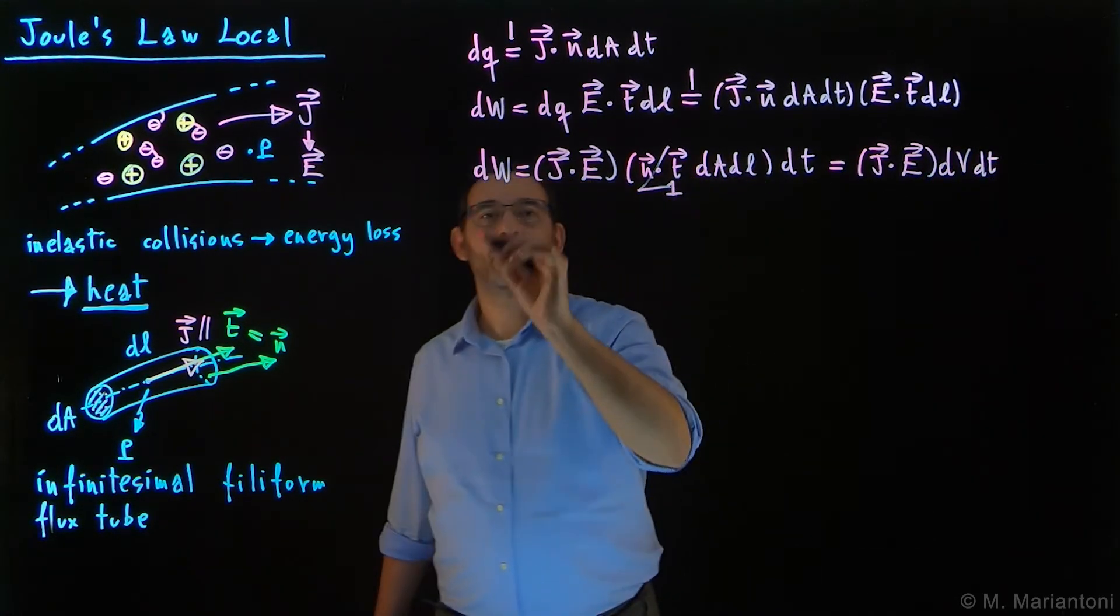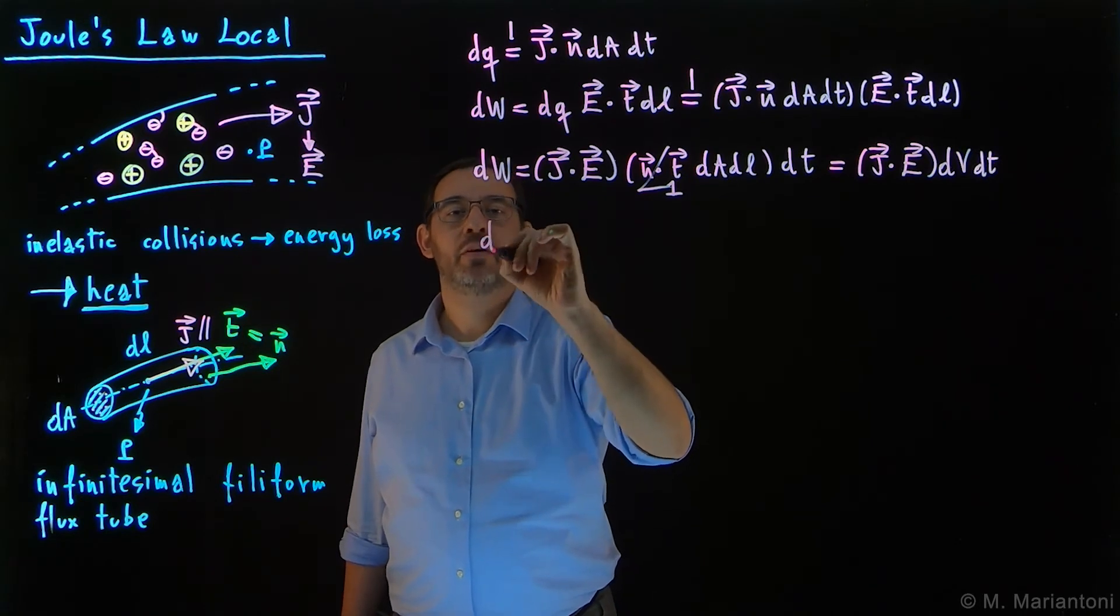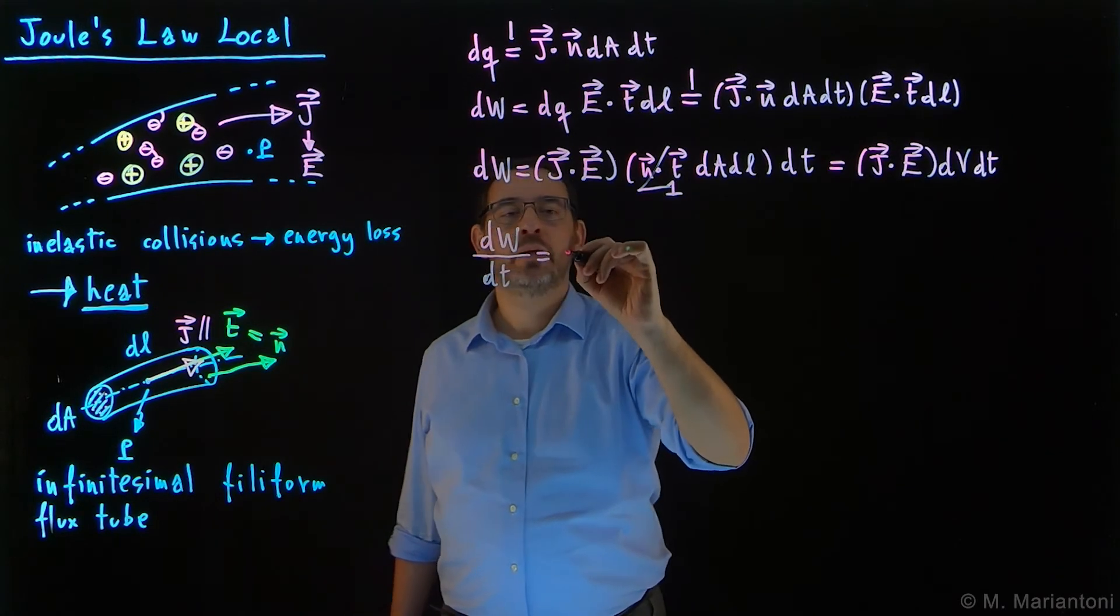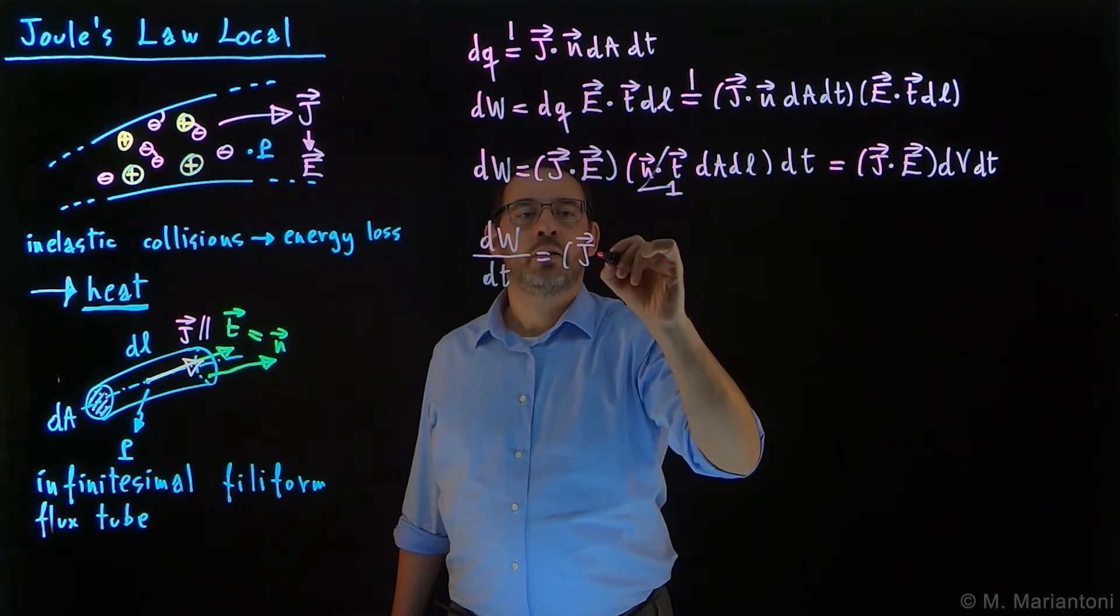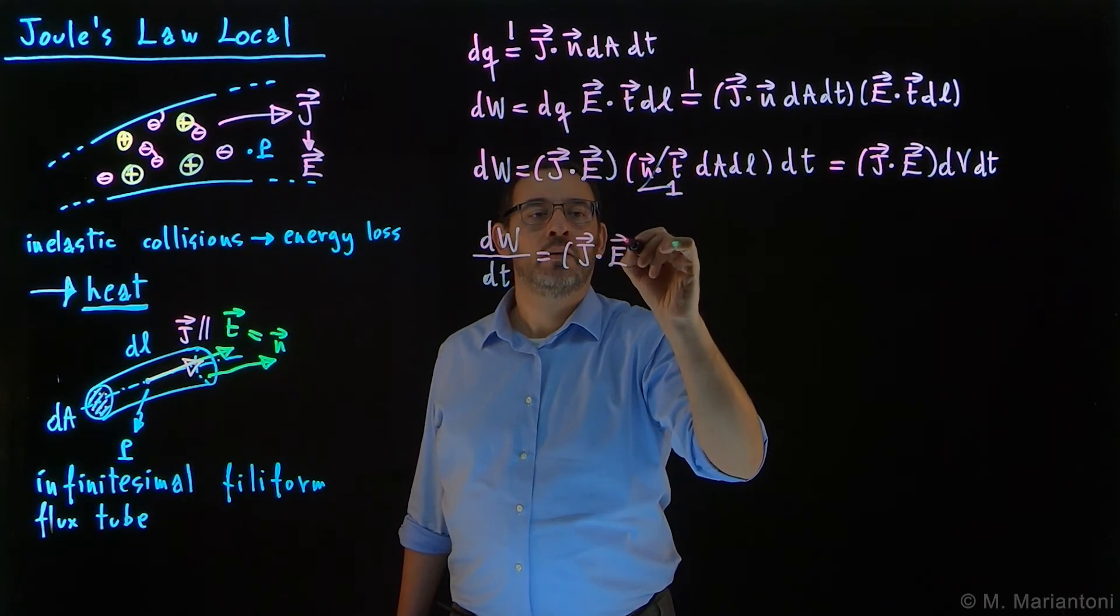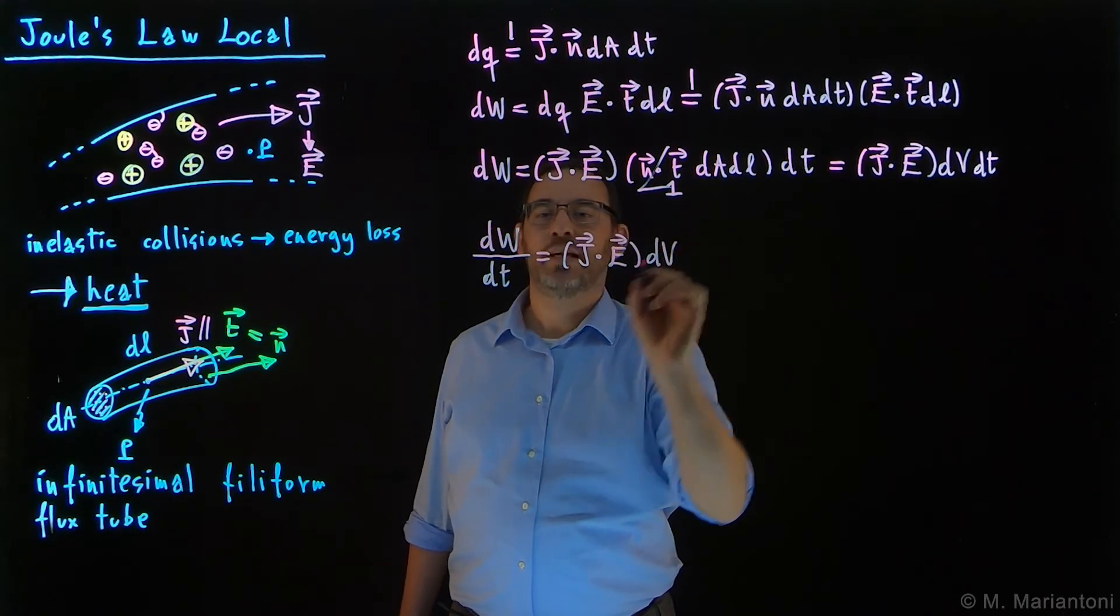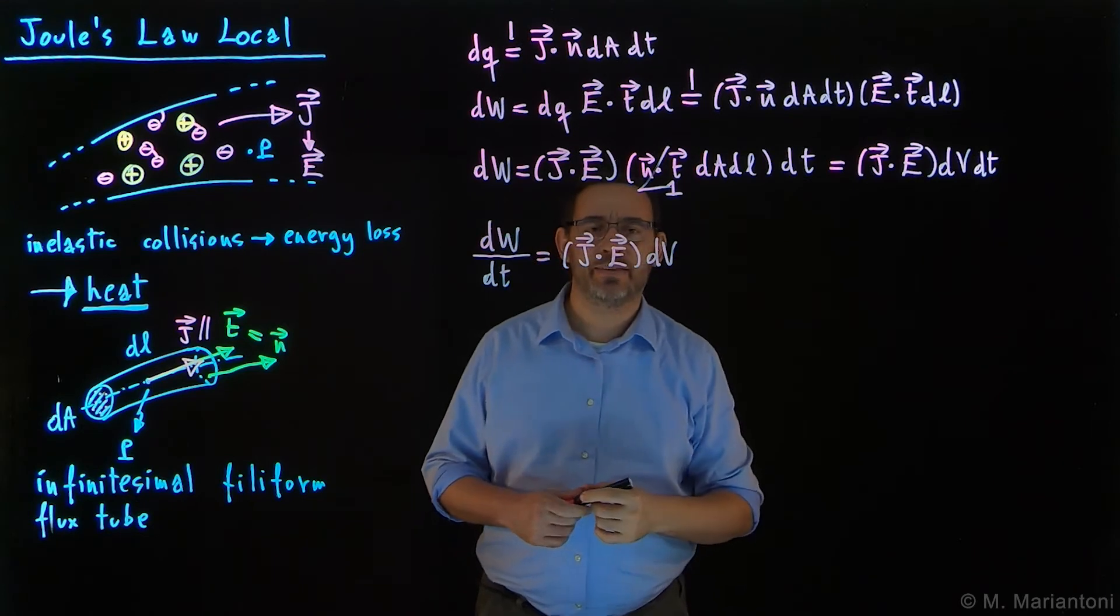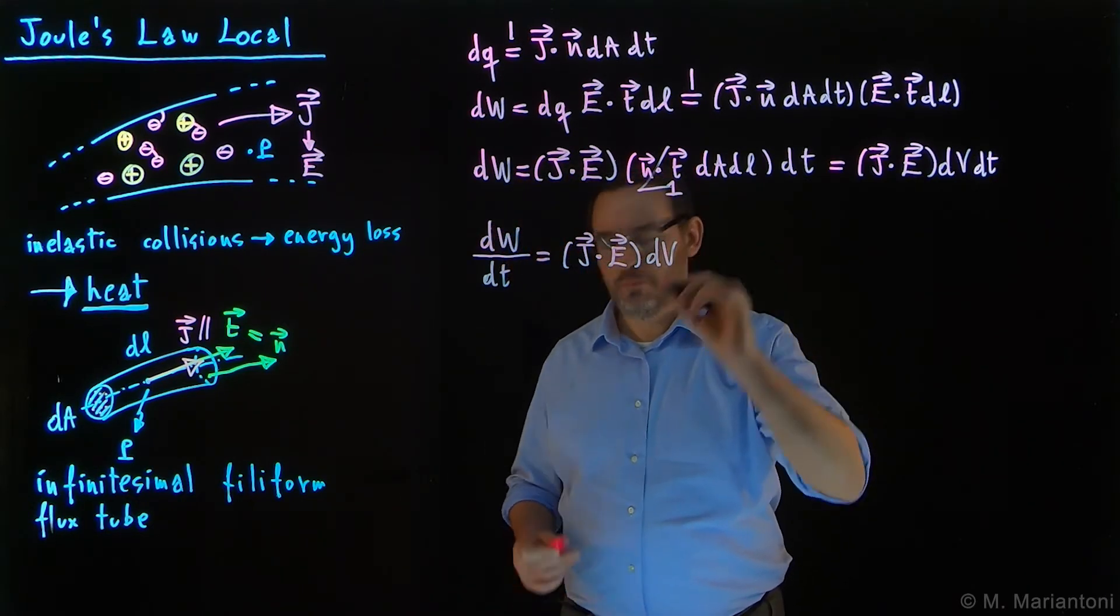So if I want to obtain the power from the work, I need to divide dw, the work, by the time dt, and so I obtain j·E dV.